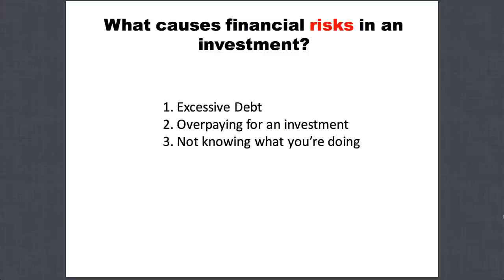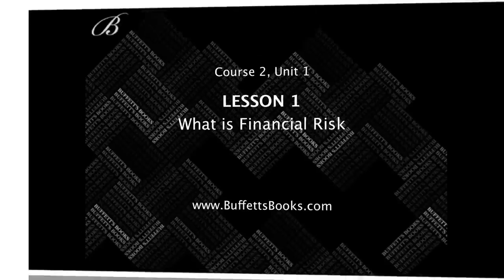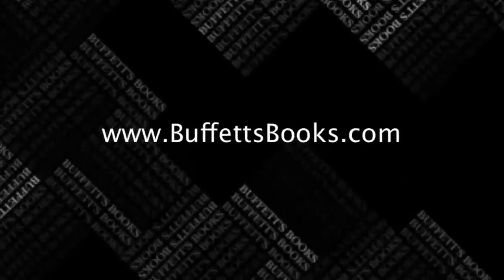Let's recap our three risks. First, excessive debt — stay away from those companies. A little debt is okay, but a lot of debt will always get you in trouble. Second, overpaying for an investment — you've got to know the value before you buy, or else you'll be the person buying the $250,000 home. Third, not knowing what you're doing. As we continue into follow-on lessons and units, we'll always compare the value of our stocks and bonds back to the 10-year federal note — it'll all start becoming clear. That completes Course 2, Unit 1, Lesson 1: What is Financial Risk? I hope you enjoyed the lesson, and I'll see you in the next unit.